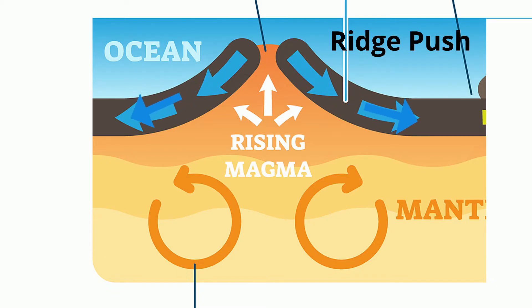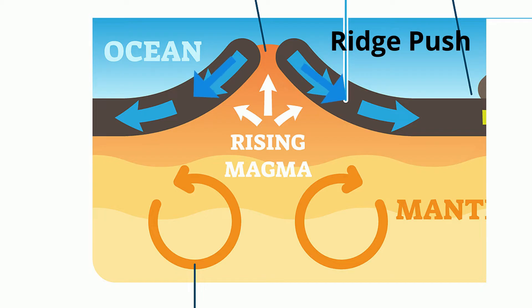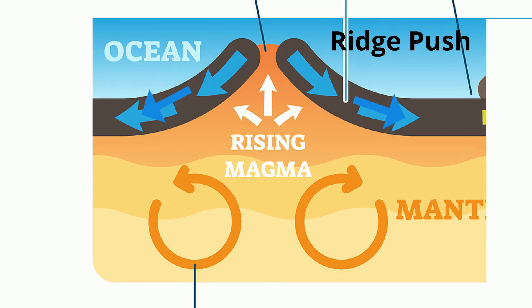As a result, the older rock will slope downward and away from the ridge. This downward force, called ridge push, pushes the plate away from the mid-ocean ridge.